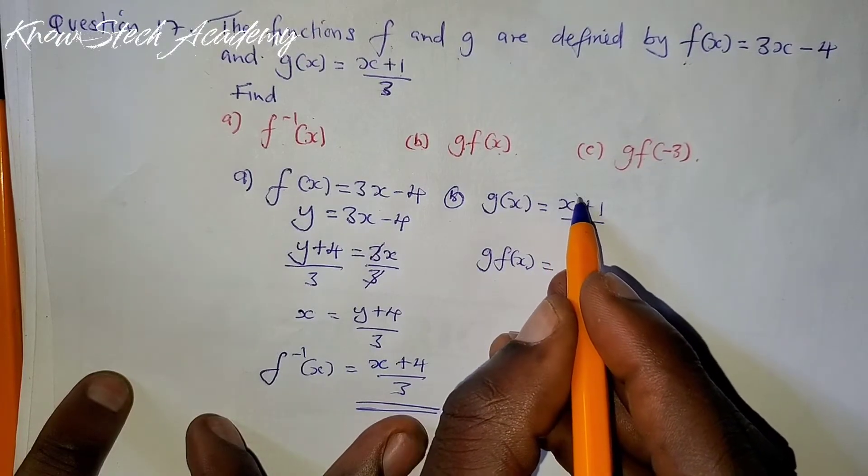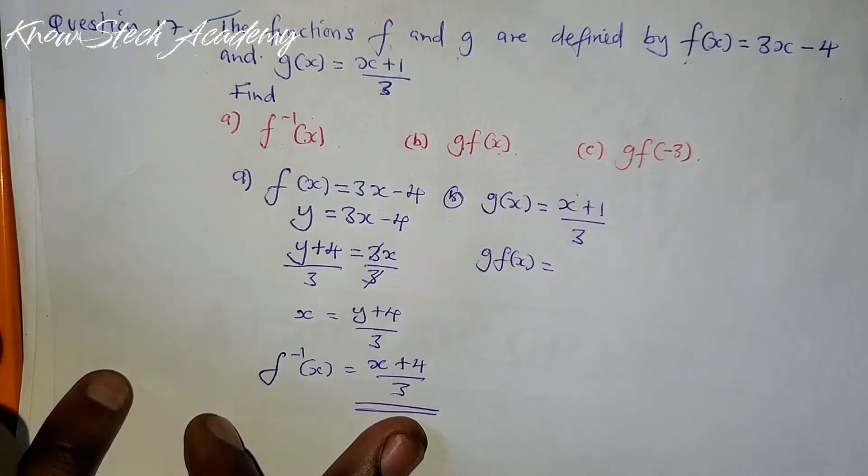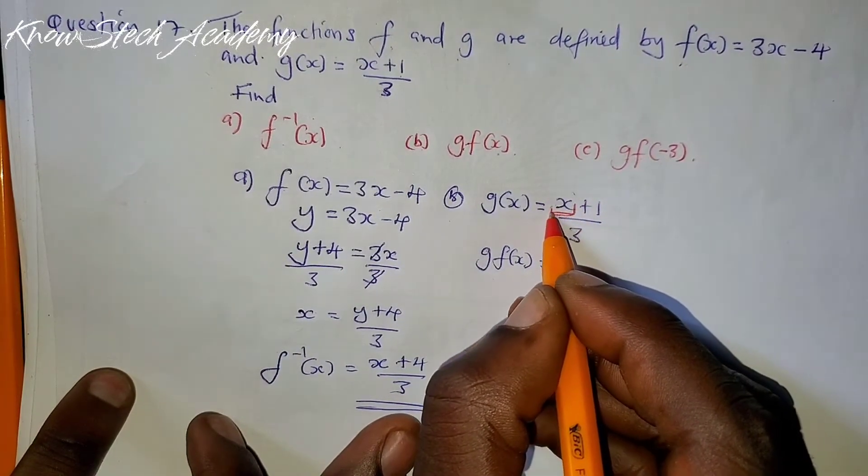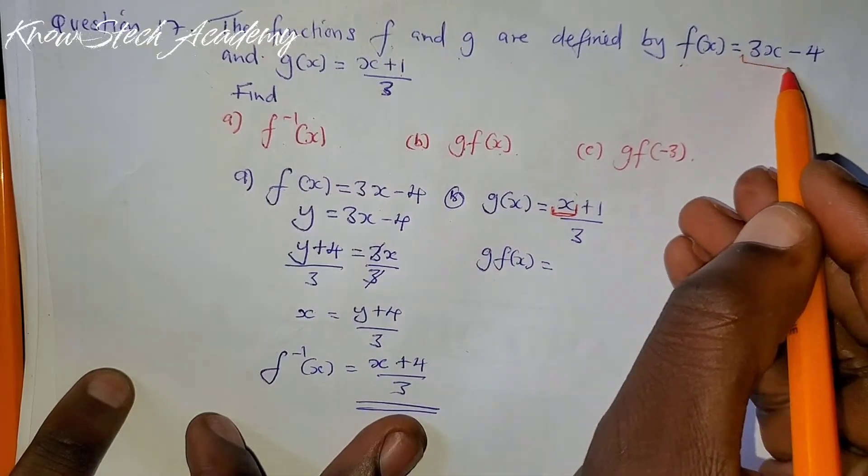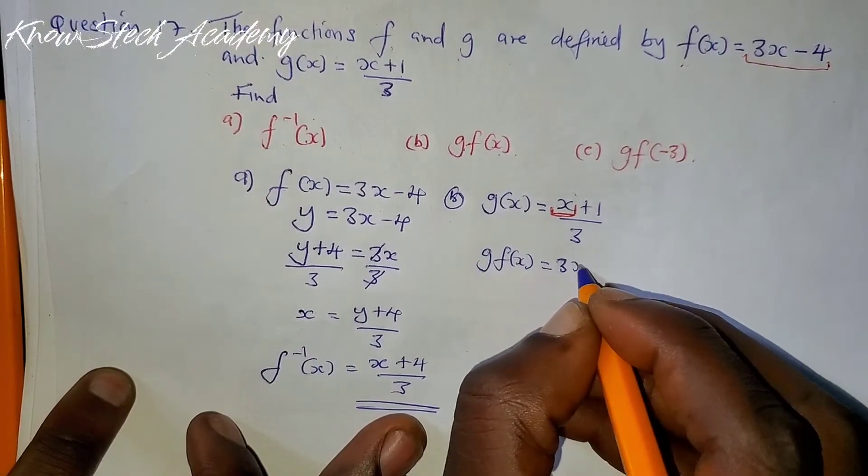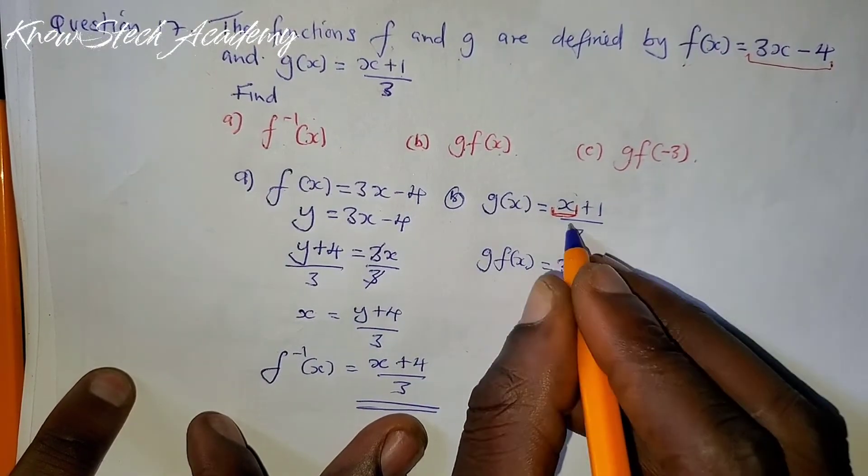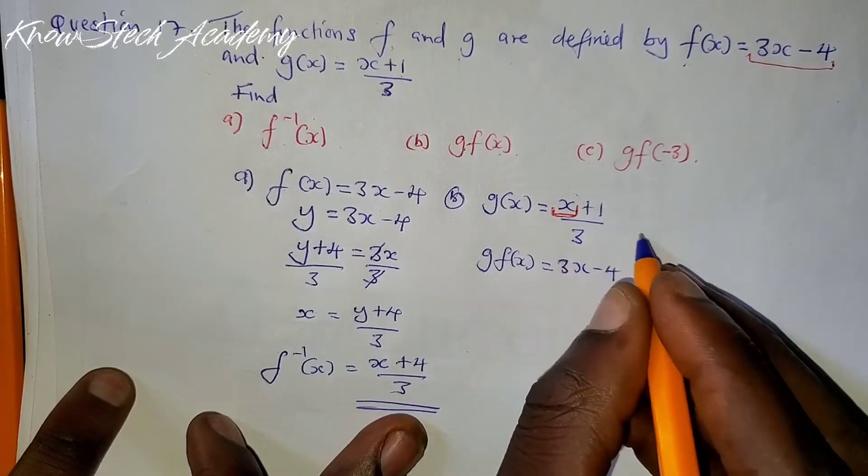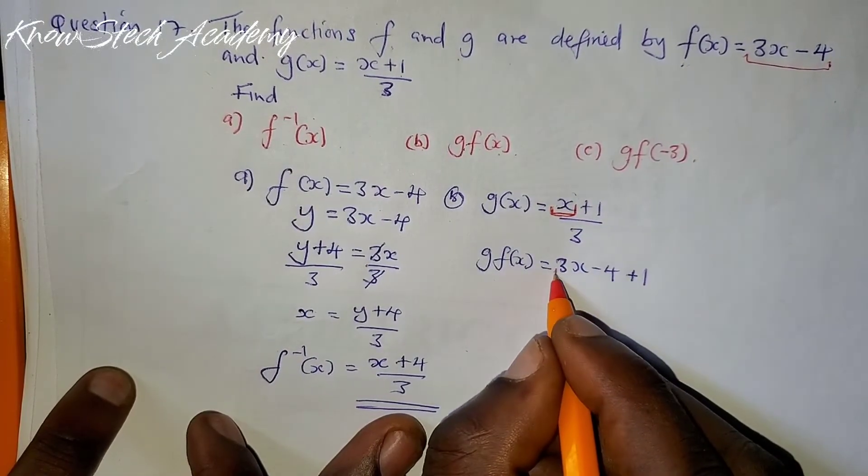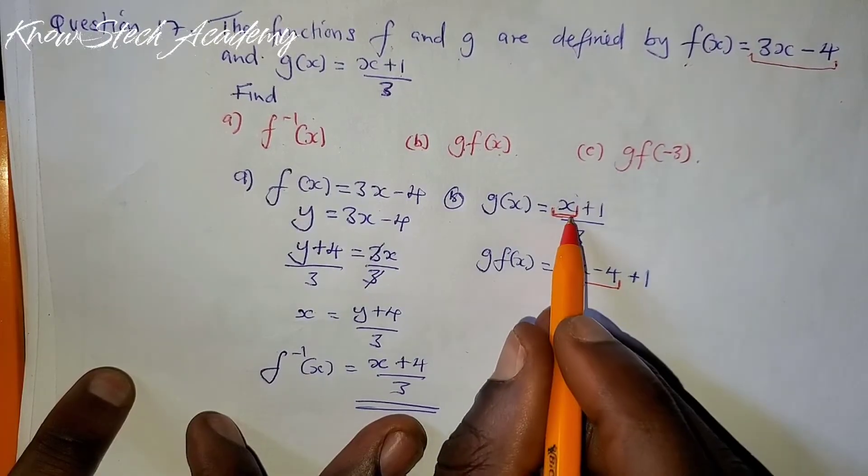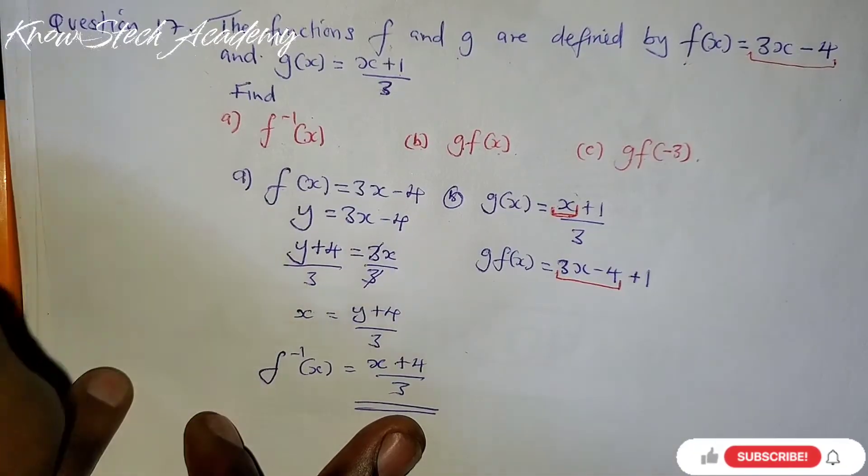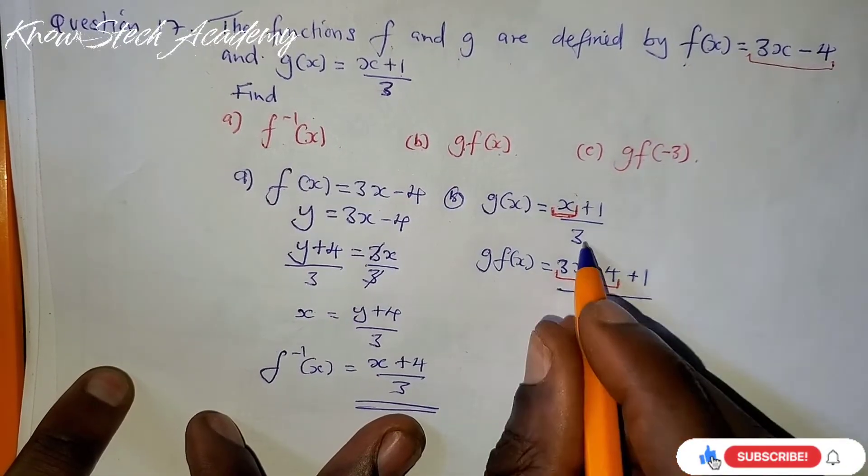We only have one place where there is x, just this one. This x will be replaced with this function. So it will be like this: 3x - 4 has replaced x. Then since there is already 1 here, we can just add plus 1. So this function has replaced x, then plus 1 is this one. Divided by 3.